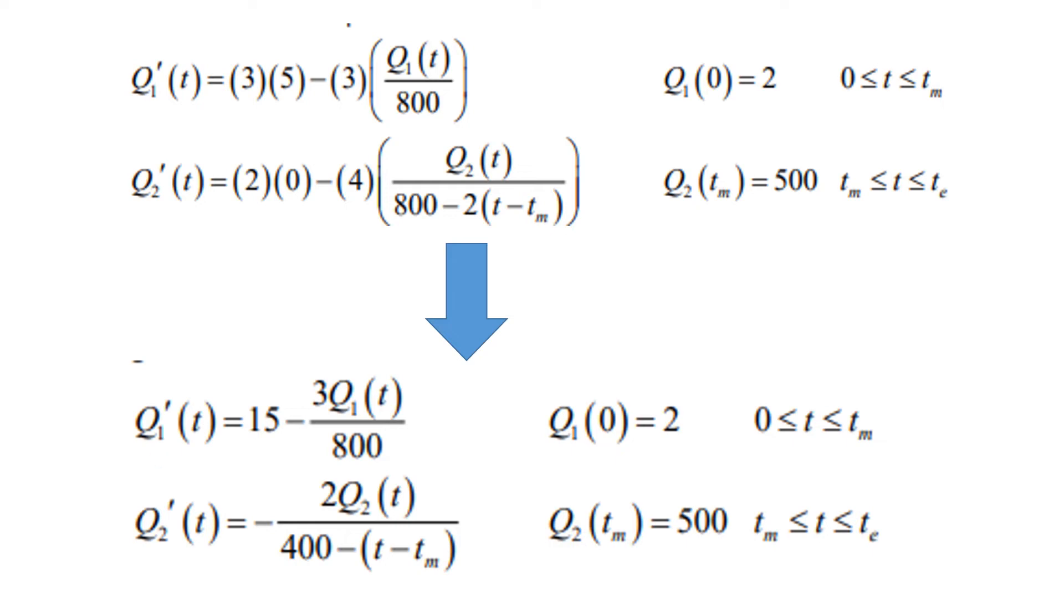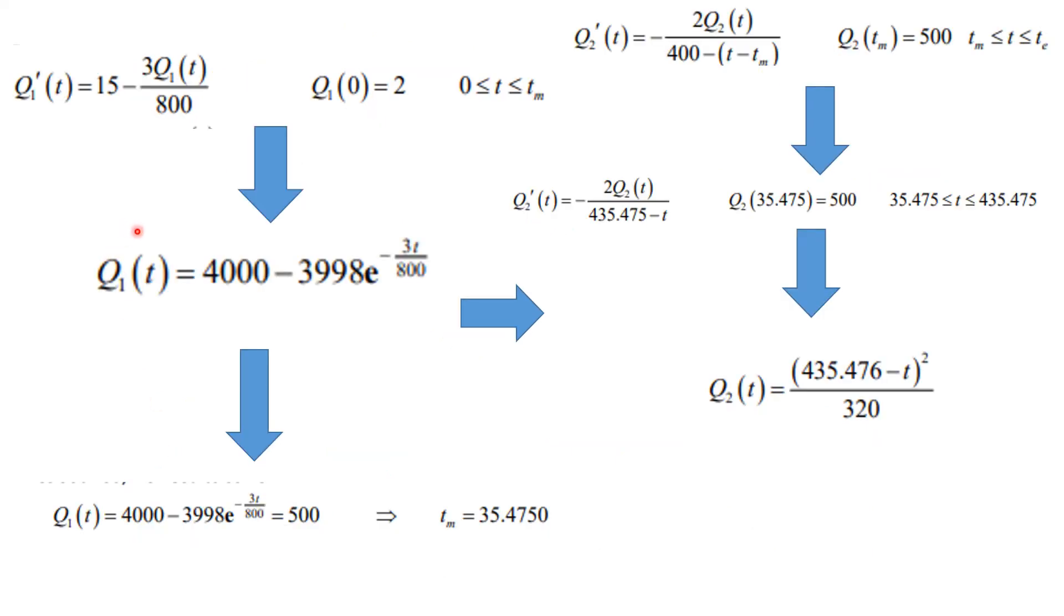Now this is a linear first order initial value problem. And this is your initial condition. And so you know how to solve this. I encourage you to do the work. I'm just going to show you the solution that you get at the end should be this. This is what Q1 of t is using that initial condition. But this allows us to figure out when does T sub m happen? Because this says, when does this amount of pollutant reach 500 ounces? And so we're solving at what time t does this equal 500? And when you solve that, you get t is 35 hours and change. So now we know what the time of intervention has to be.